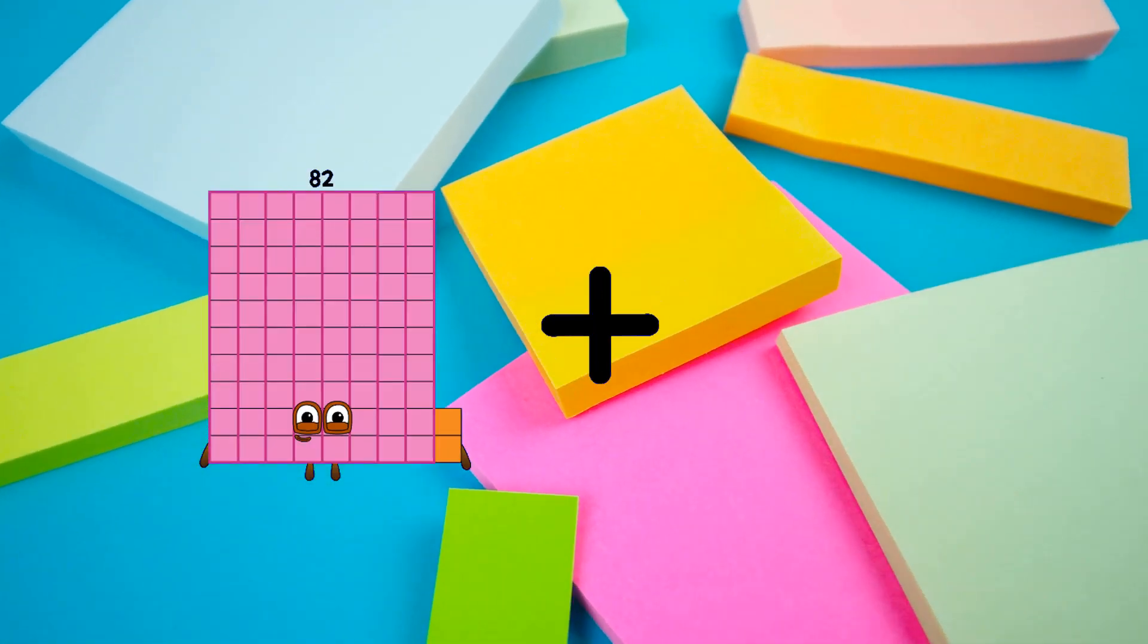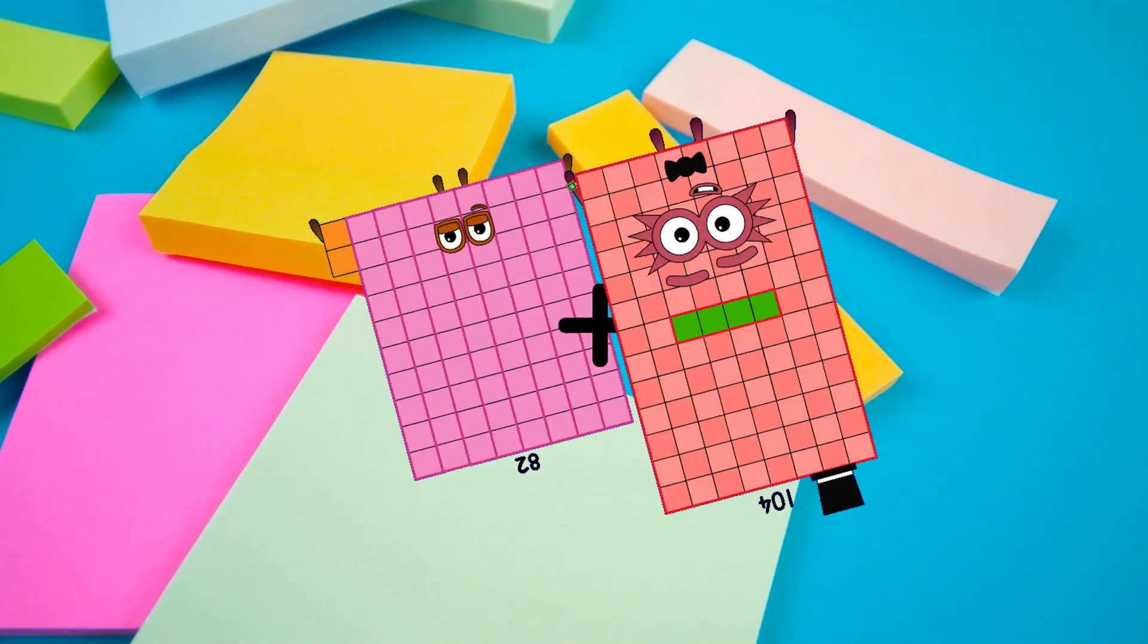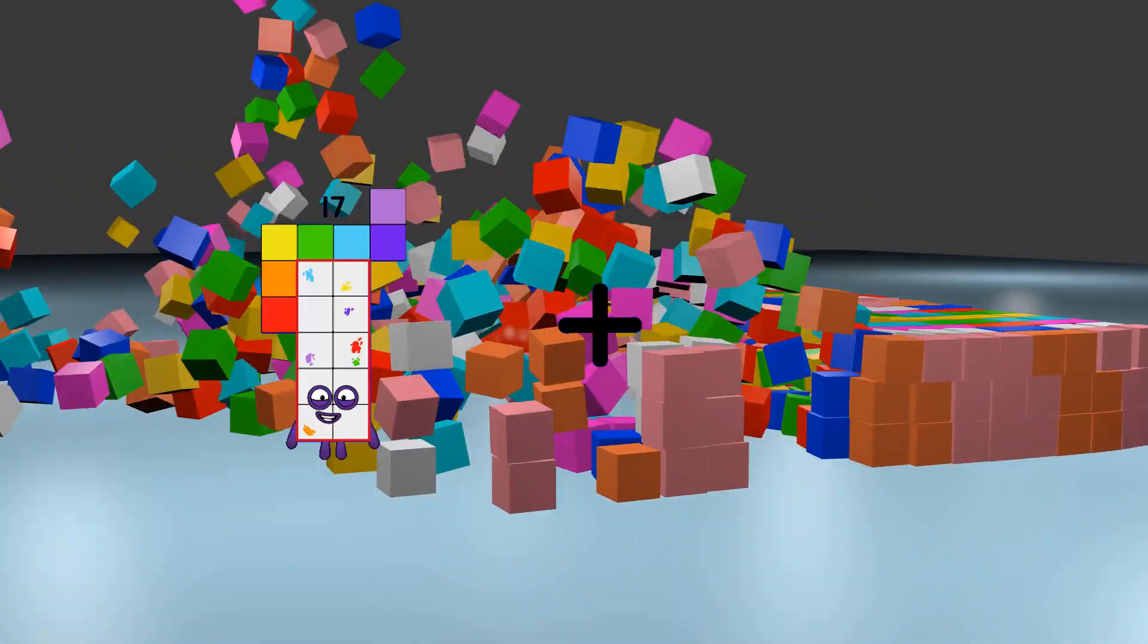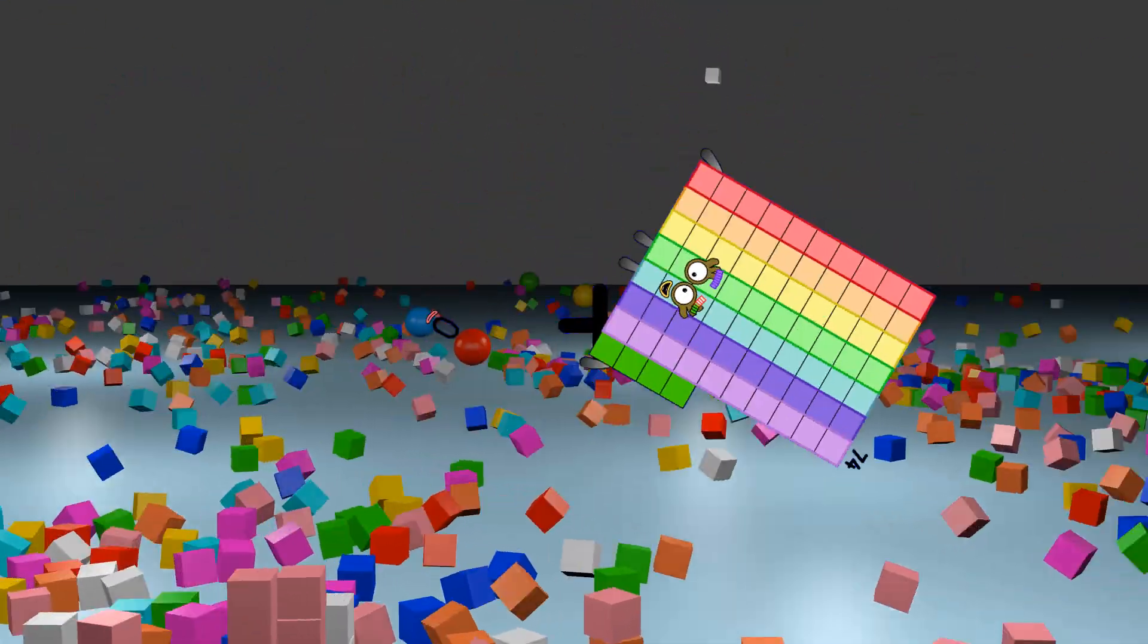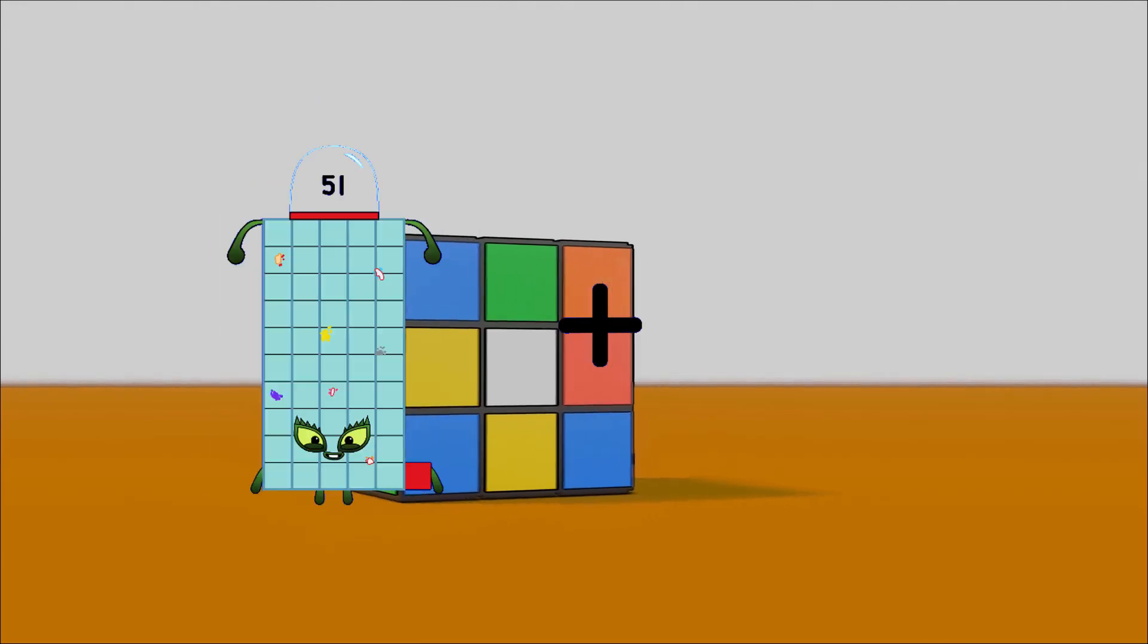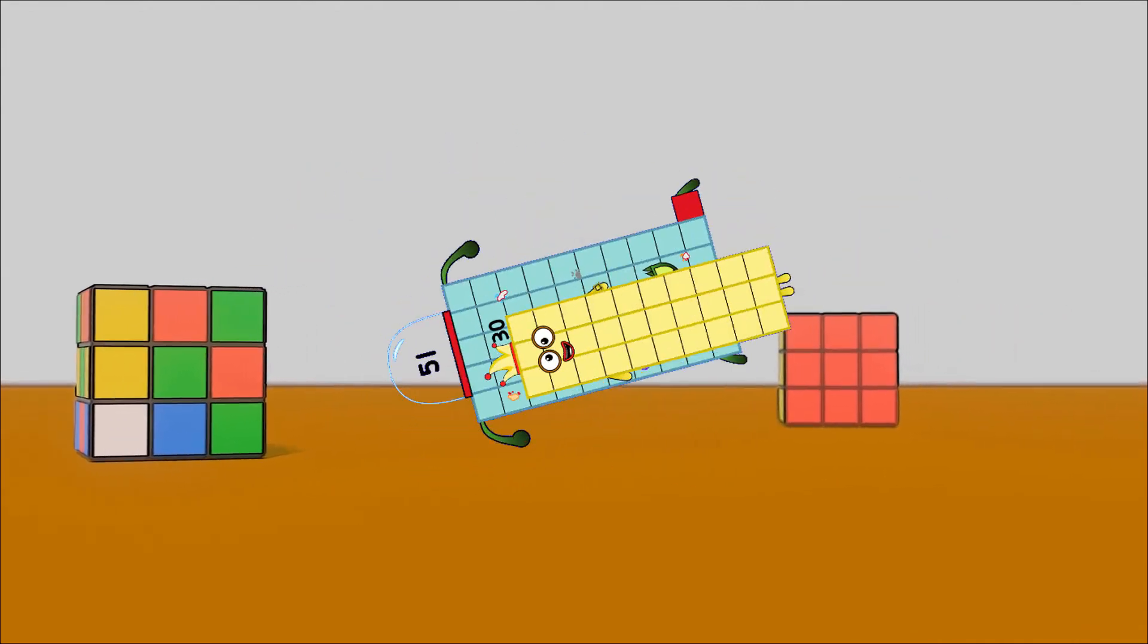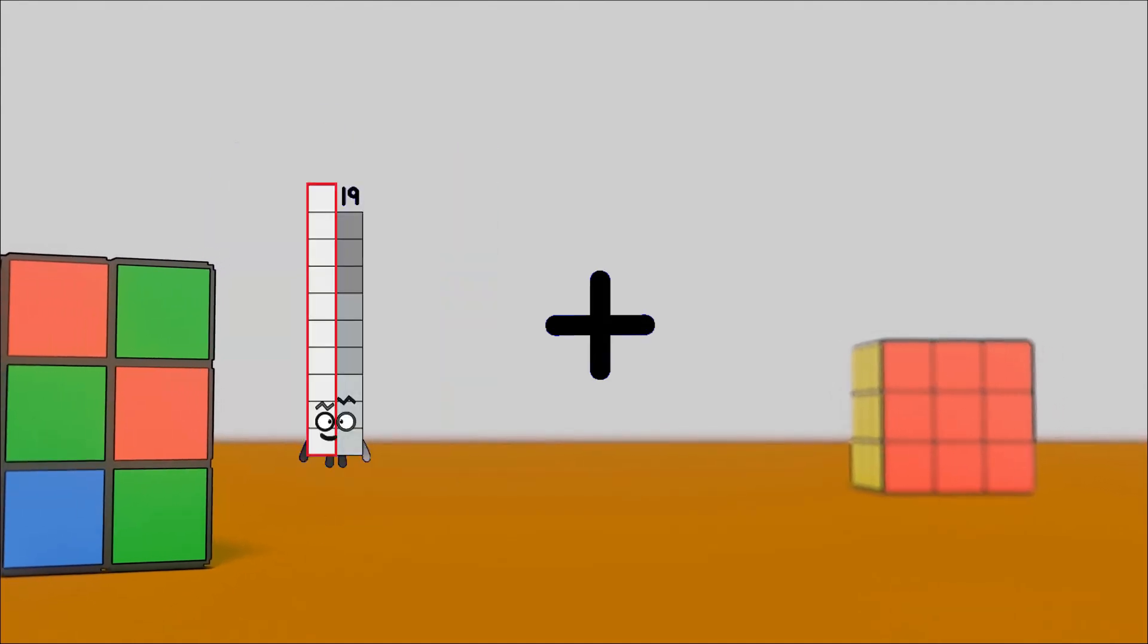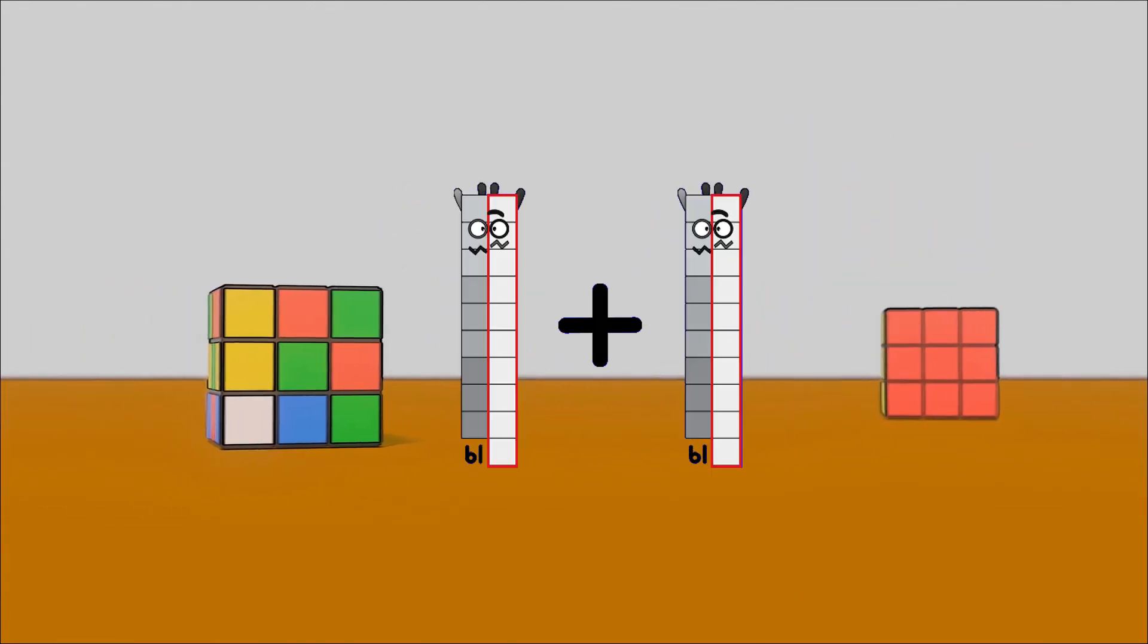82 plus 104 equals 186. 0 plus 74 equals 74. 51 plus 30 equals 81. 19 plus 19 equals 38.